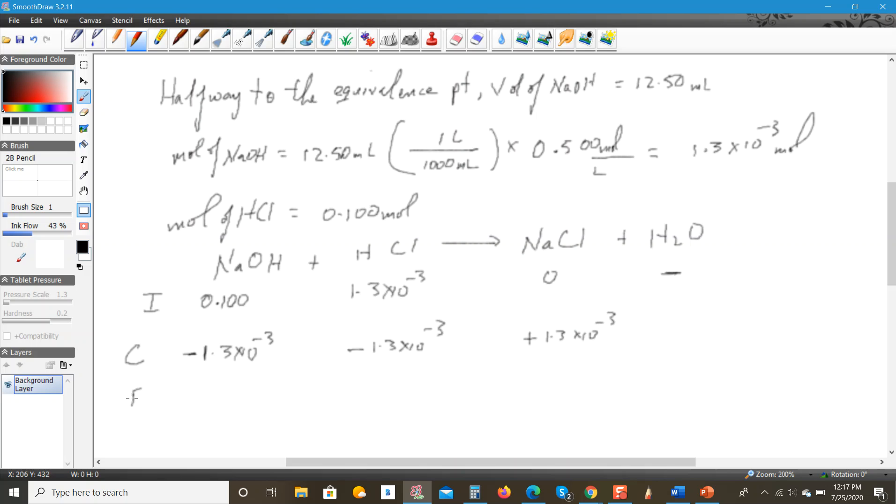At the end of the reaction, this will be 0, this will be +1.3 × 10^-3, and this would be equal to, according to my calculation, 0.987.